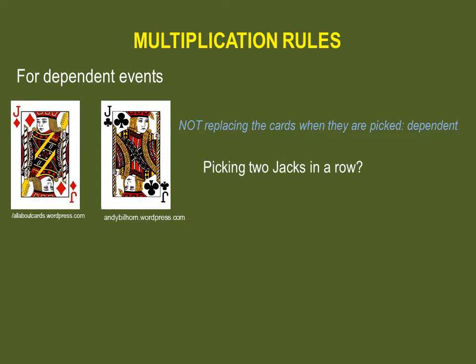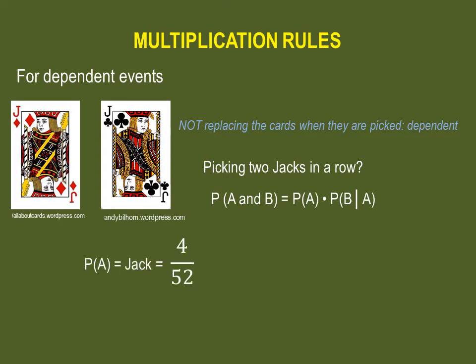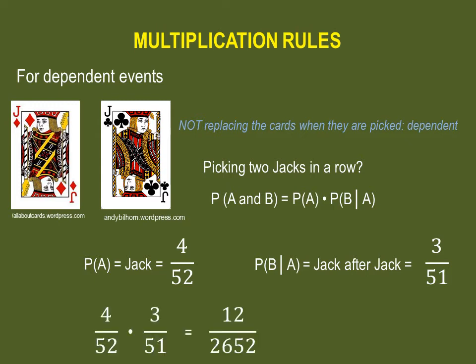What would be the probability of picking two jacks in a row, no matter the suit, without replacing the card after it's been picked? For the first jack, we have fifty-two cards in the deck and four jacks, so that's four out of fifty-two. Event B would be picking the second jack. Since we have not replaced the card, we now have only fifty-one cards, and only three jacks remaining. Multiply four out of fifty-two by three out of fifty-one and you have a probability of twelve out of two thousand six hundred and fifty-two. Simplified, that gives us three out of six hundred and sixty-three.